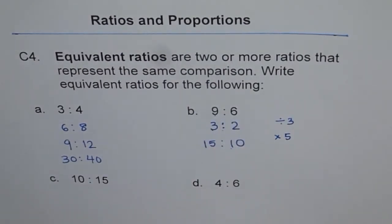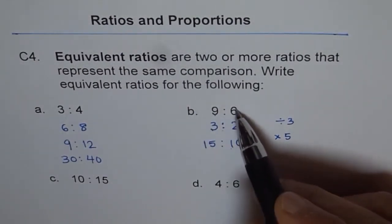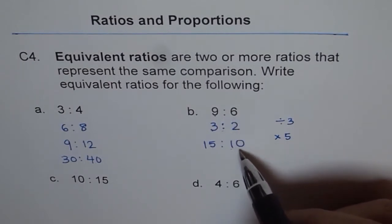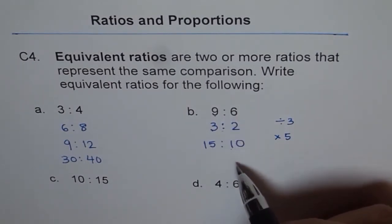So 15 is to 10 is equal to 3 is to 2 and is also equal to 9 is to 6. Do you see that? They look very different but they are the same ratios. They are all equivalent ratios.